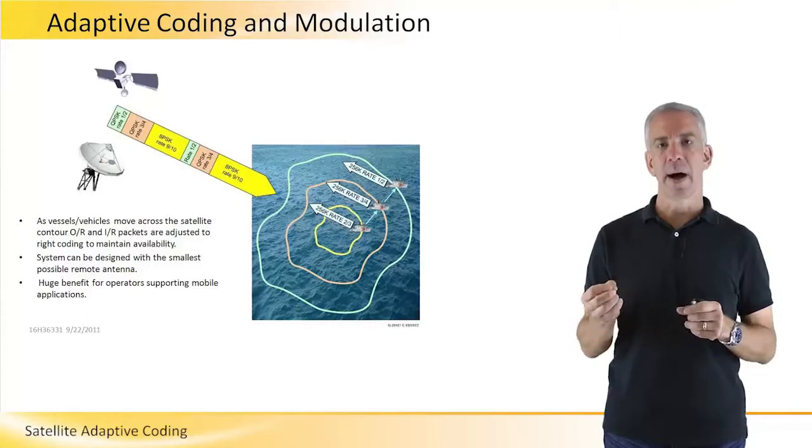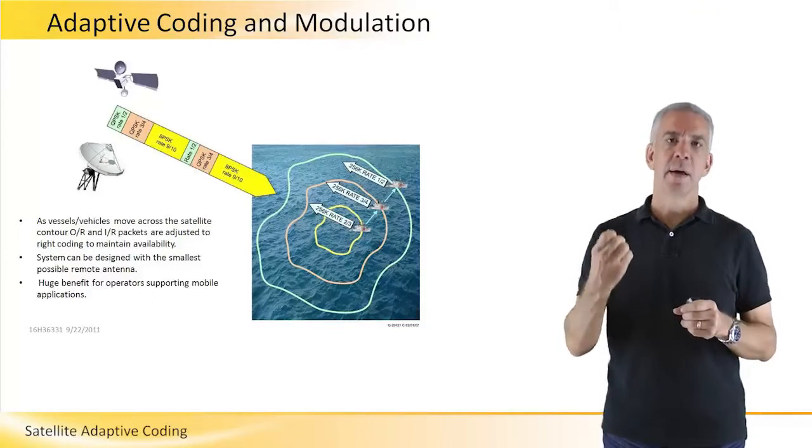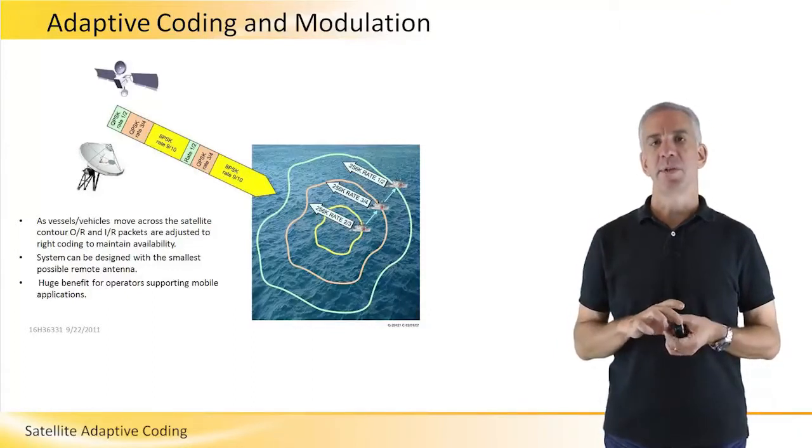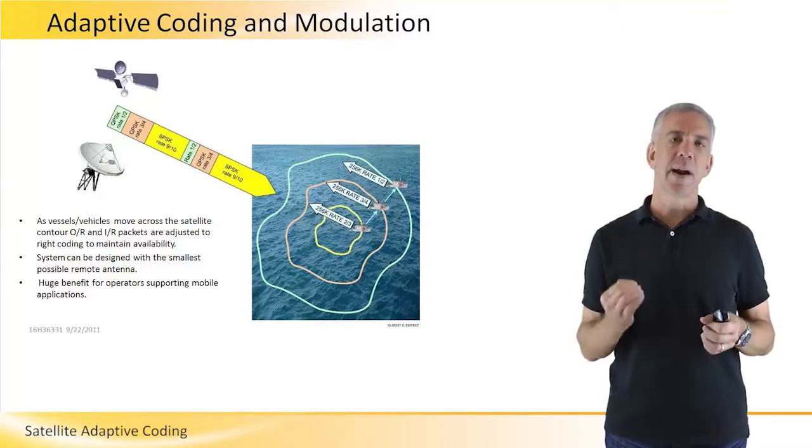The remote terminal is constantly measuring and evaluating the received signal from the hub or gateway station. As that signal degrades, the remote sends instruction to the gateway or hub station to change the combination of modulation or coding.